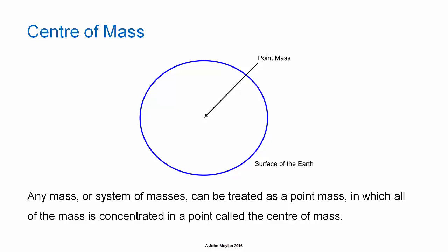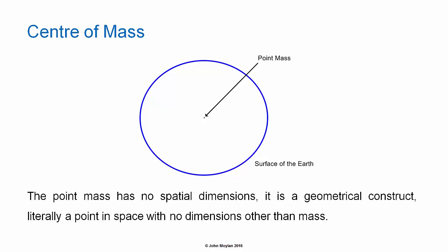Any mass or system of masses can be treated as a point mass in which all of the mass is concentrated in a point called the center of mass, or otherwise known as the center of gravity. This point has no spatial dimensions — it is a geometrical construct. It is literally a point in space with no dimensions: no height, no thickness, no width. The only thing that the center of mass has is mass.